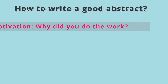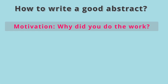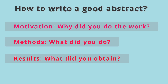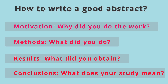For motivation, you have to answer: why did you do the work? Was there any gap in your field that you wanted to address? For methods: what did you do — what was the idea or experimental methods involved? For results: what did you find in your study? For conclusions: what does your study mean, or what is the significance of the work? In the conclusions, you can link back to the gap, whether you addressed it, and what benefits your work offers to the audience. If you answer these four questions within the journal's word limit, you will have a compelling abstract.